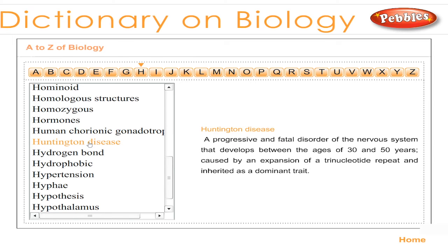Huntington disease: a progressive and fatal disorder of the nervous system that develops between the ages of 30 and 50 years, caused by an expansion of a trinucleotide repeat and inherited as a dominant trait.